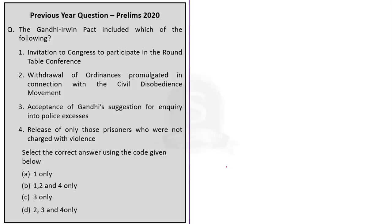Now let us move on to the first question: The Gandhi-Irwin Pact included which of the following? We are given four statements. The first statement: Invitation to Congress to participate in the round table conference. Second statement: Withdrawal of ordinance promulgated in connection with the civil disobedience movement. Third statement: Acceptance of Gandhi's suggestion for enquiry into police excesses. Fourth statement: Release of only those prisoners who were not charged with violence.